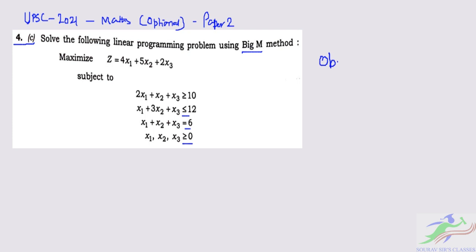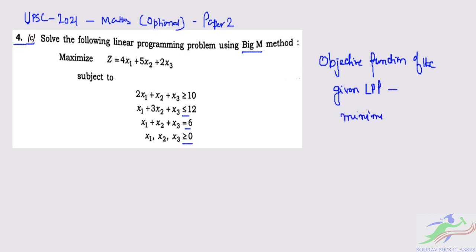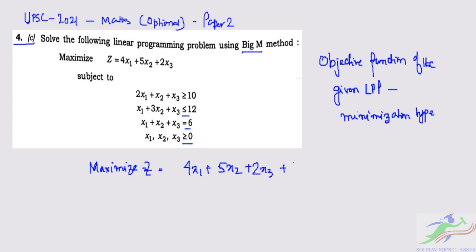The objective function of the given LPP is of maximization type. Now we can write the given LPP in the standard form: maximize Z = 4x1 + 5x2 + 2x3 + 0·s1 + 0·s2 − M·a1 − M·a2.